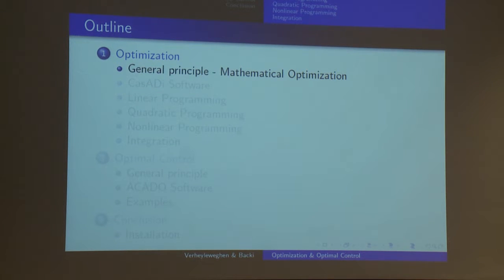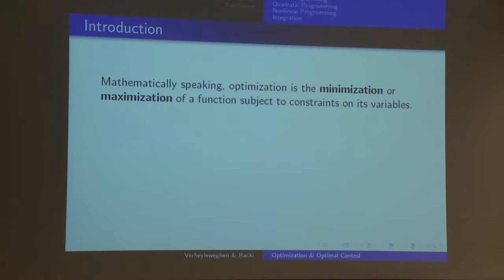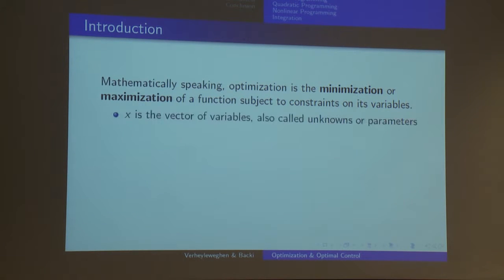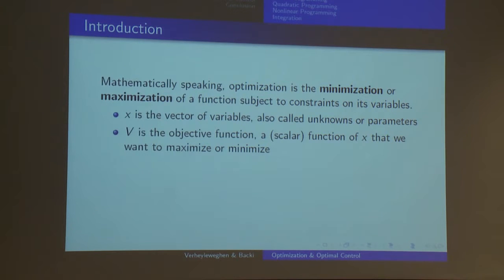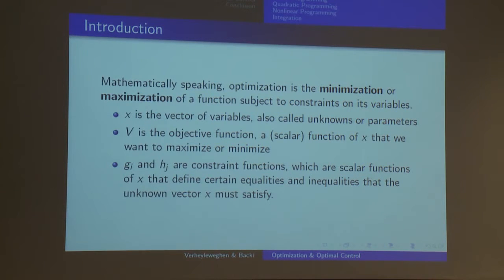Mathematically speaking, optimization is the minimization or the maximization of a function subject to constraints on its variables. We define X to be a vector of variables, also called the unknowns or the parameters. Then we have an objective function V, which is a scalar function of X that we want to maximize or minimize. We also have constraint functions G and H, which define equalities or inequalities that X must satisfy.